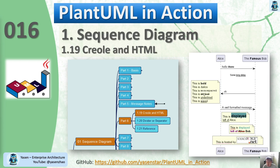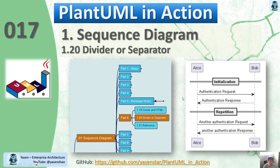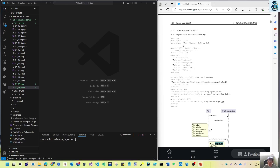It looks like this — with some special format characters we can make text italic. That is primarily used in markup language, and we can use that in our PlantUML as well. So let's test that.